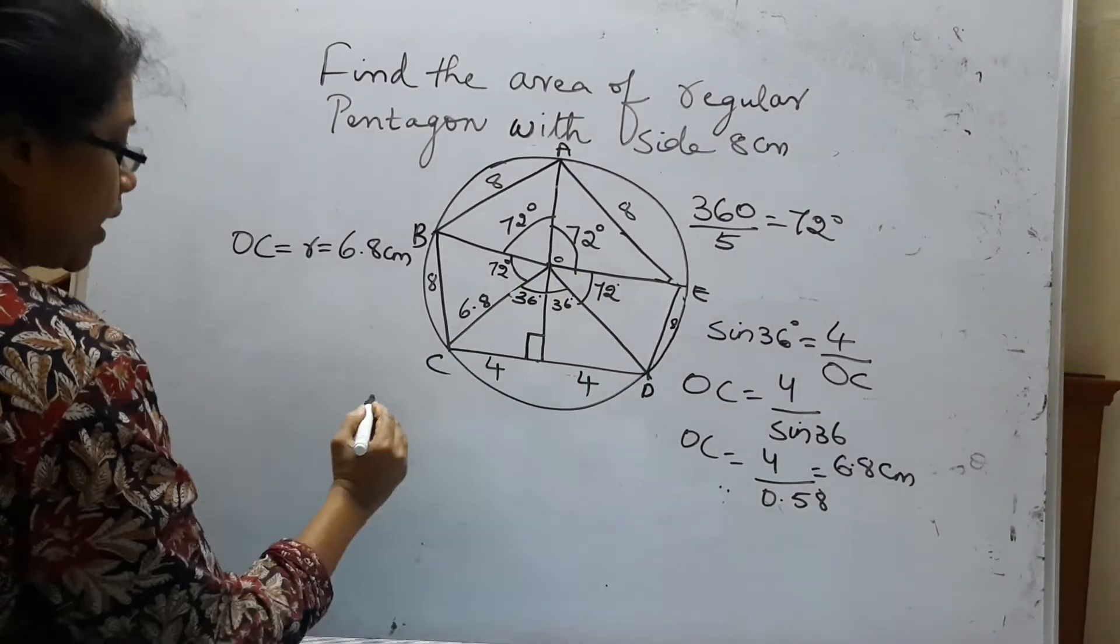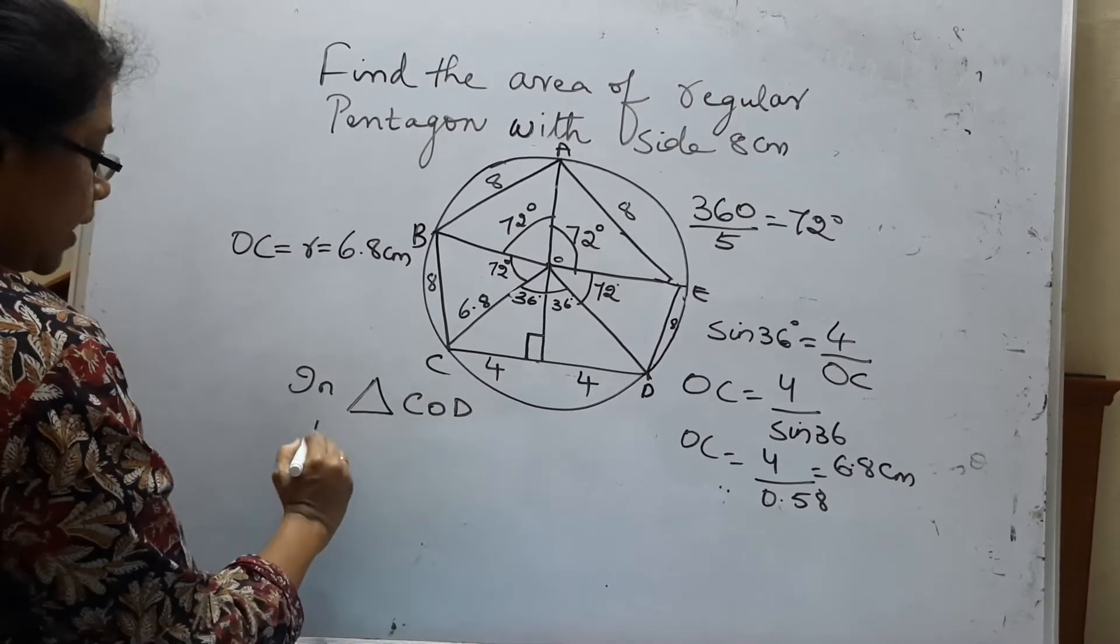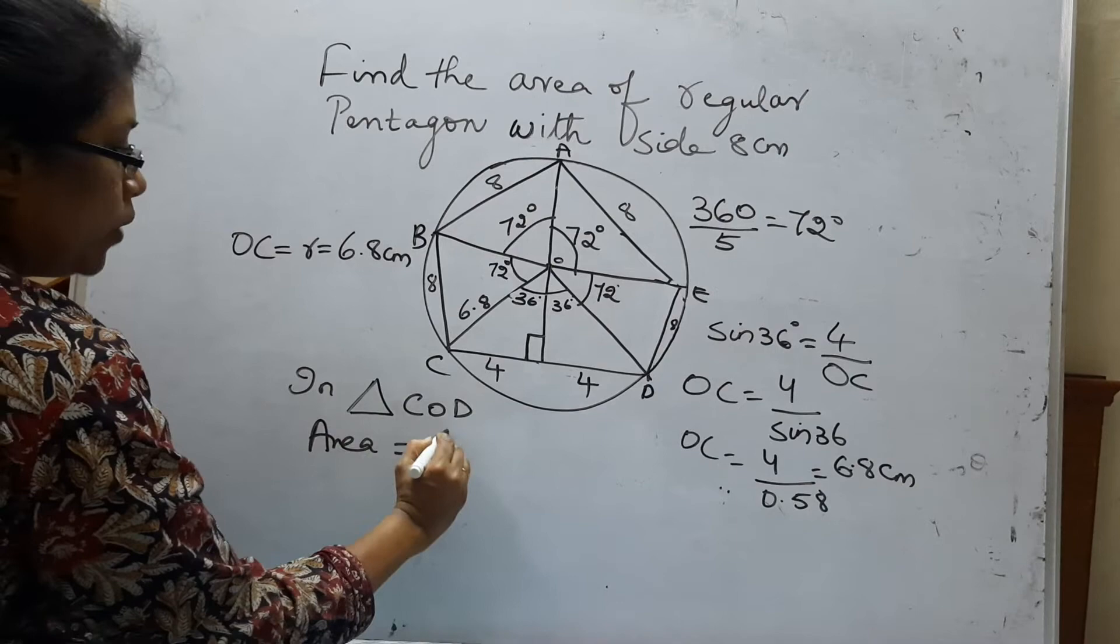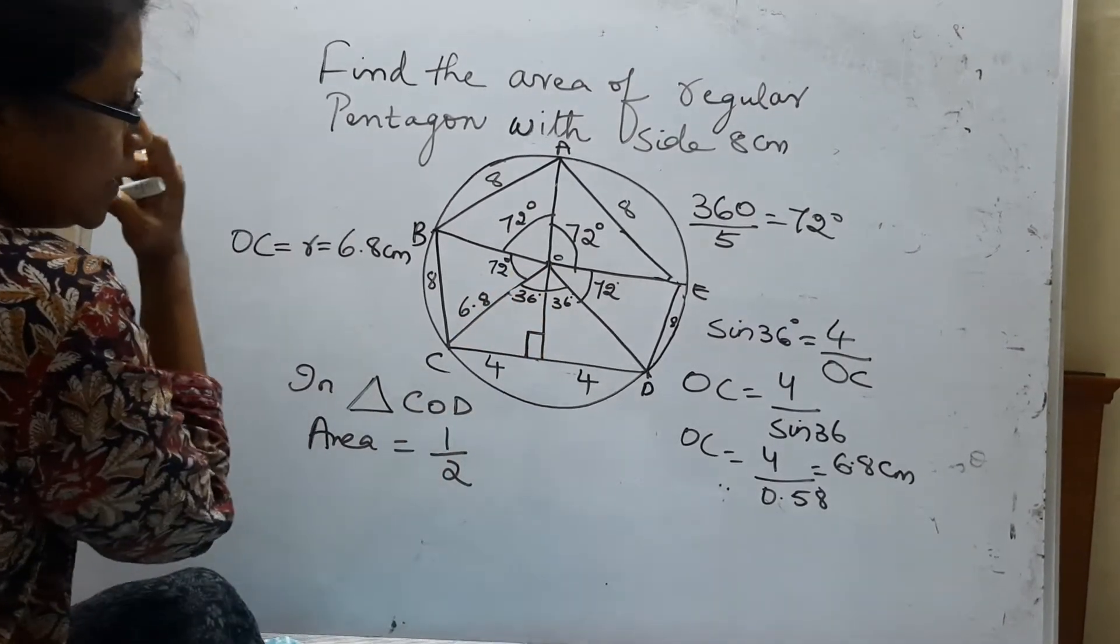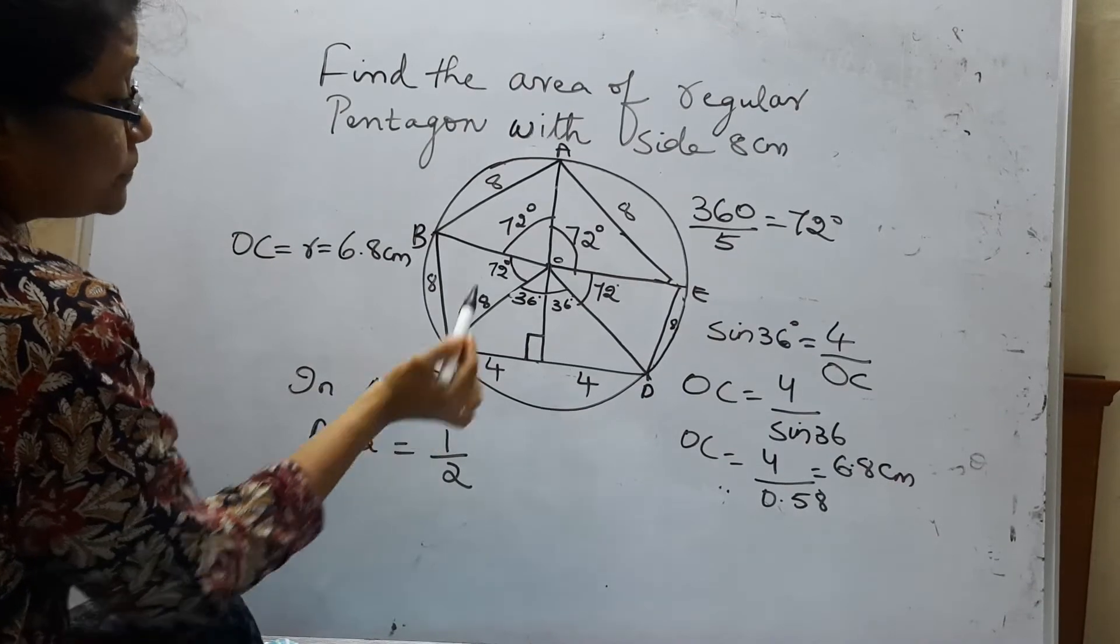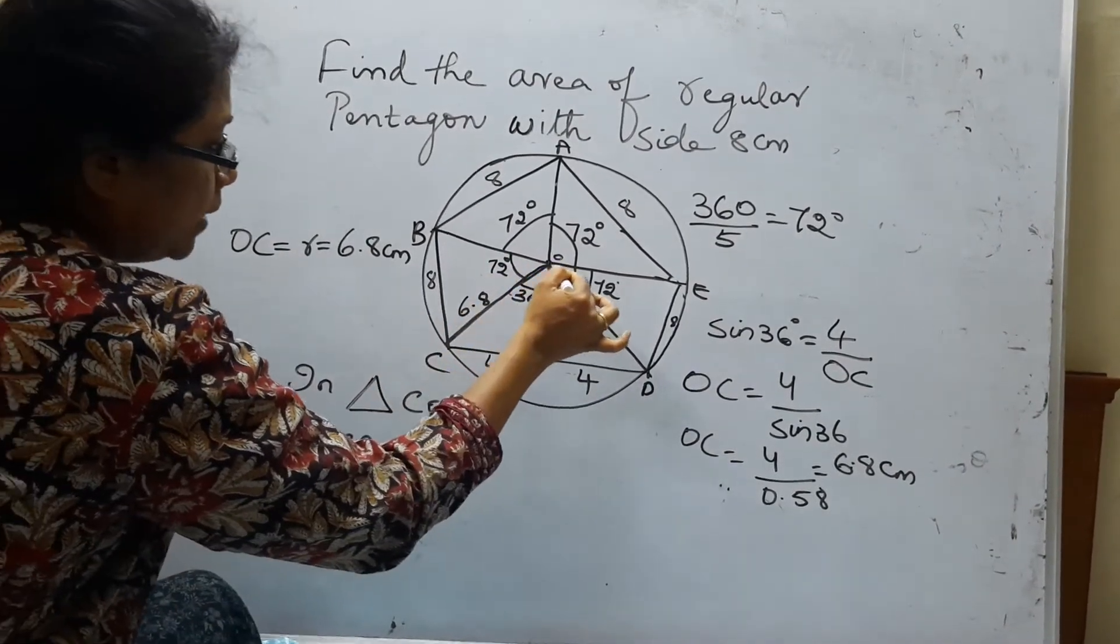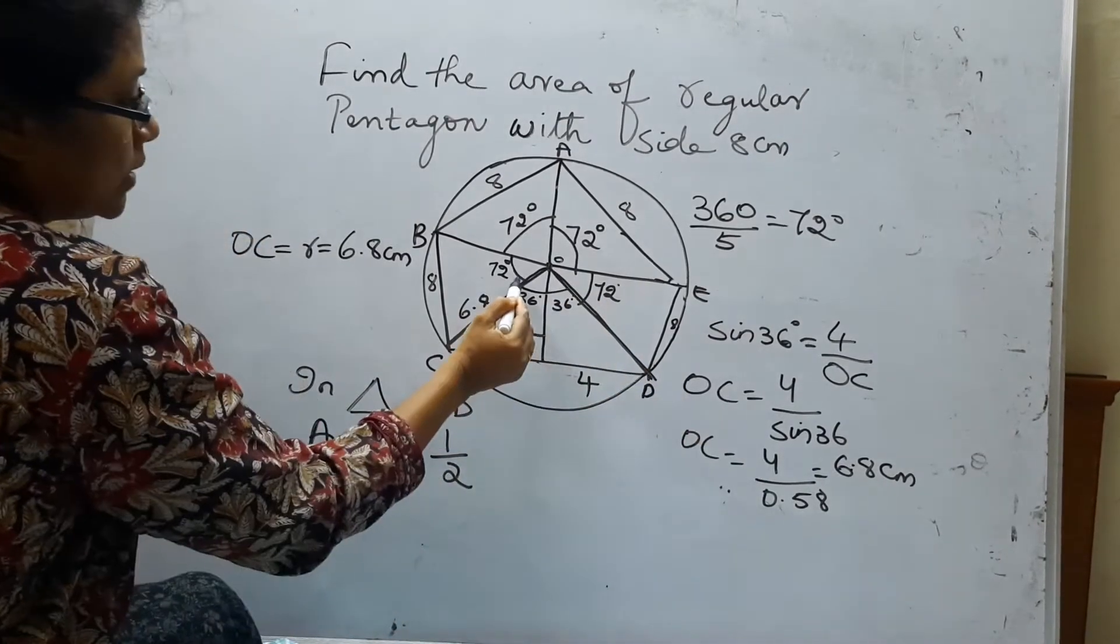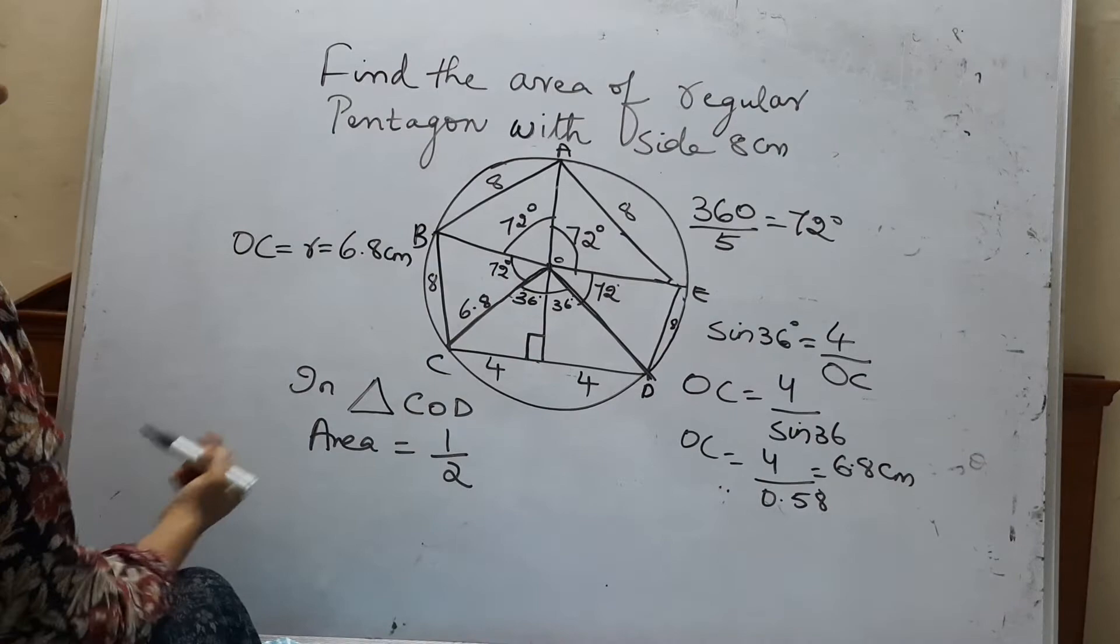Now I am going to take triangle COD. So what is the area of this? Area equal to half. Now take the included sides. So this is 36 you got. The whole angle is 36. This is 90.